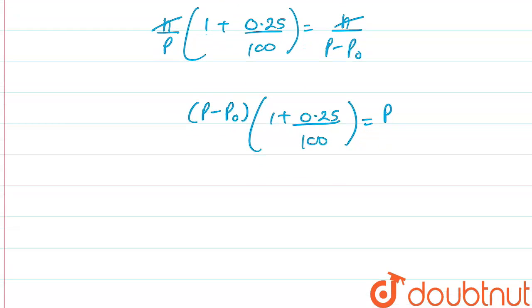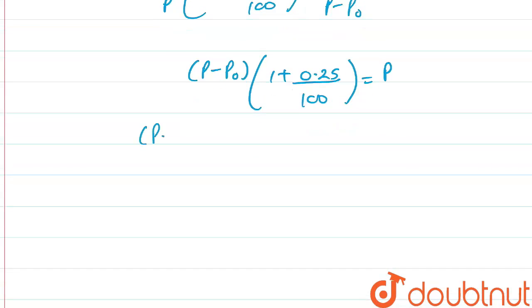Now from here, solving further, we will be getting p minus p0 into 1.0025 equal to p.